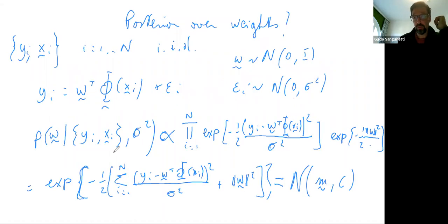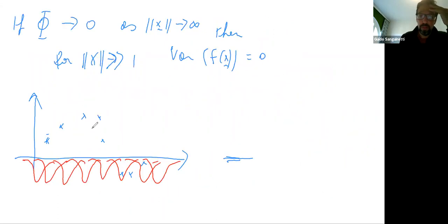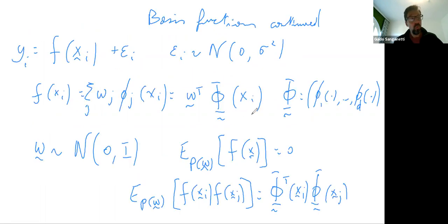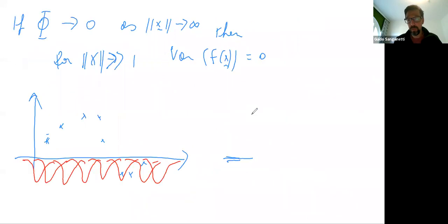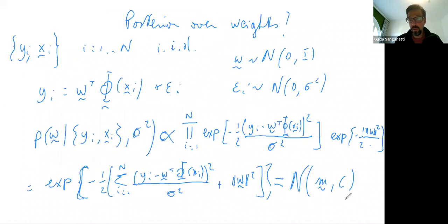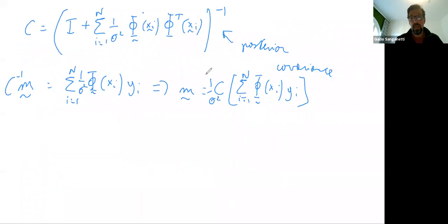So going back to our setup: the ensemble of random functions that fit the data are functions obtained as linear combinations of the basis functions with weights drawn from this posterior — a Gaussian with mean m and covariance C.